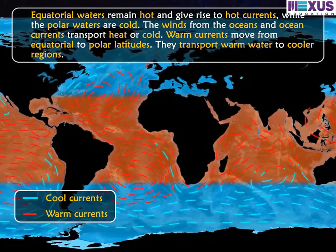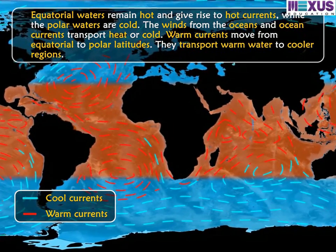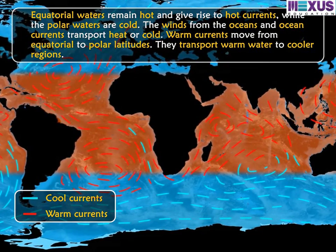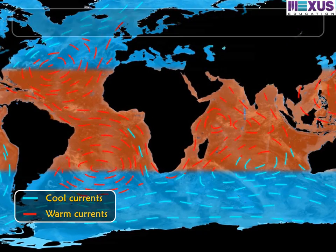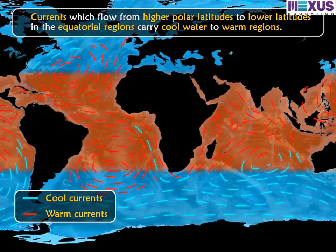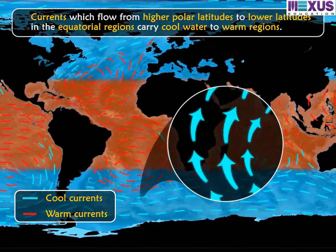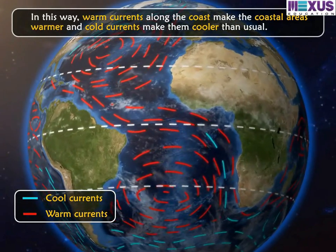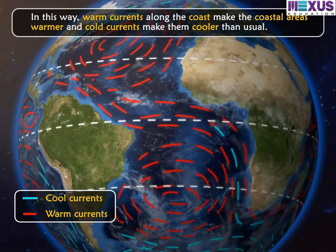The winds from the oceans and ocean currents transport heat or cold. Warm currents move from equatorial to polar latitudes, transporting warm water to cooler regions. Currents which flow from higher polar latitudes to lower latitudes carry cool water to warm regions. In this way, warm currents along the coast make coastal areas warmer, and cold currents make them cooler than usual.